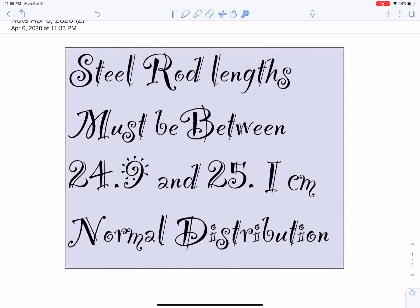This is a steel rod length question in which you're doing quality assurance. It says that the lengths must be between 24.9 and 25.1 centimeters. So you're producing these steel rods and they need to be between this tolerance. Some of them you're going to have to throw out and most of them you should be keeping depending on your manufacturing process.